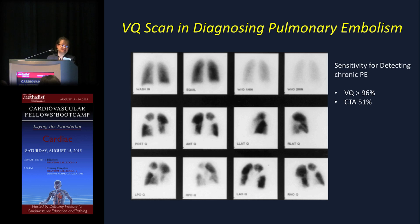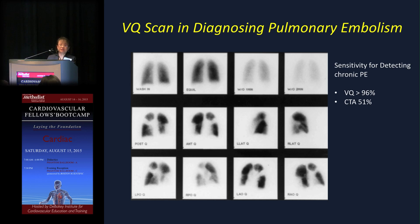There are many studies comparing CT and VQ scan, with varying results. The take-home message is: CT is very good for acute situations, but if pretest probability is high and the CT is negative, do not stop there — go one more step and get a VQ scan.